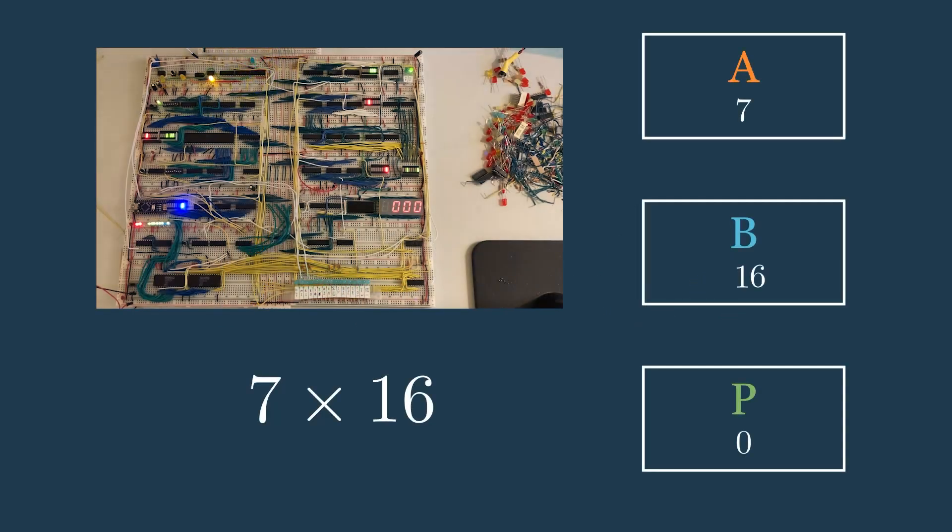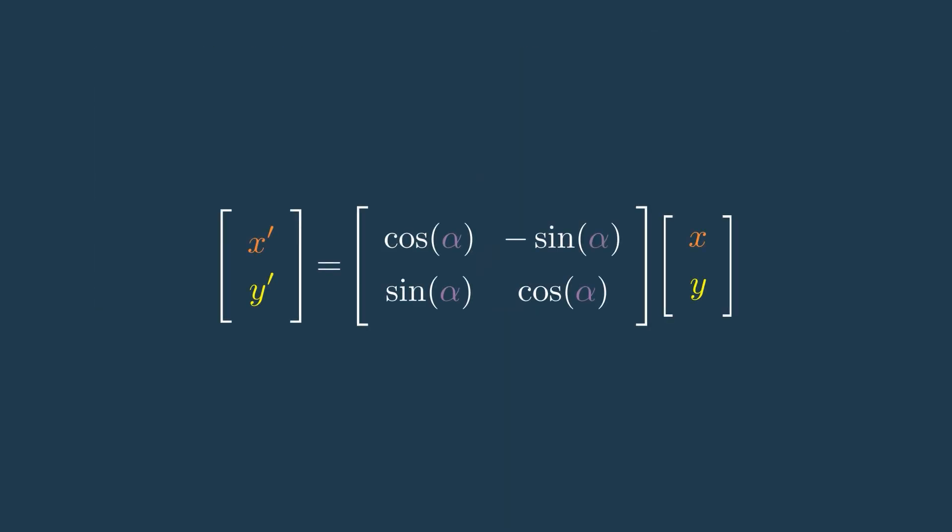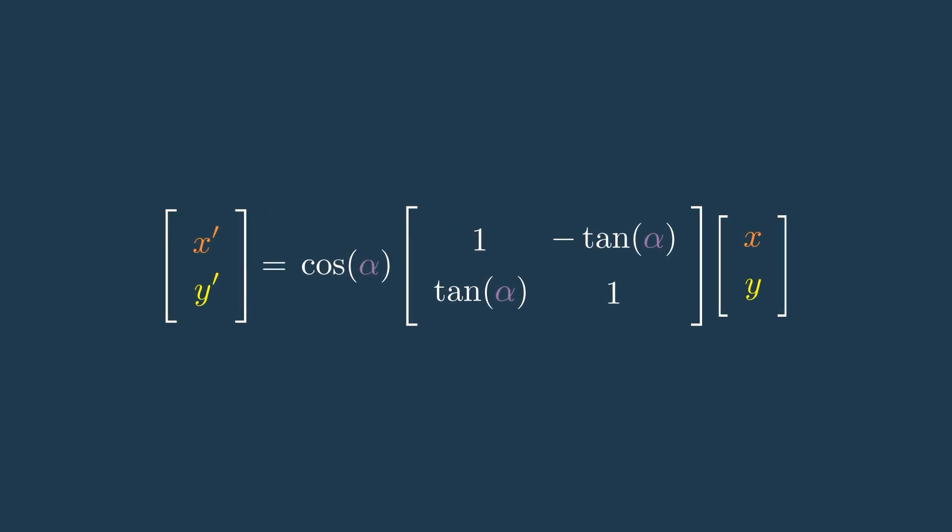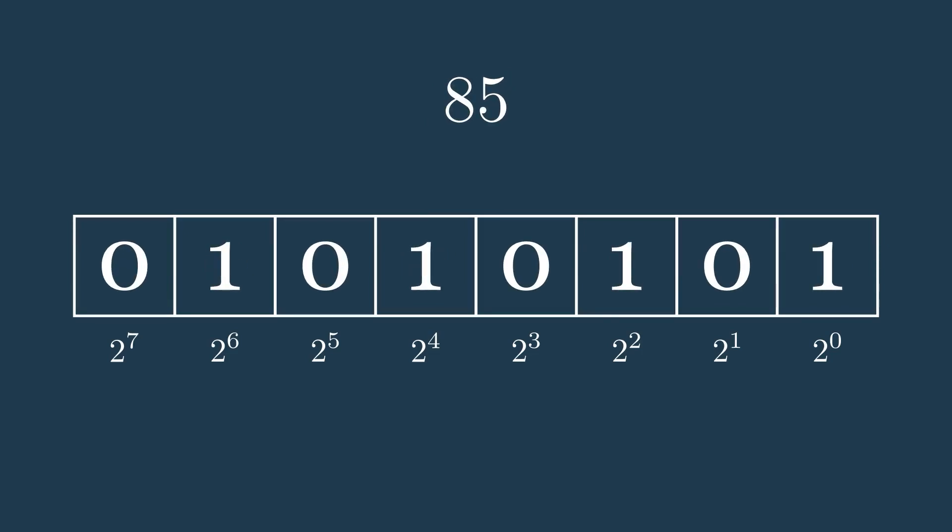After that, we saw that multiplying on computers is actually pretty slow, and we figured out that if we factor out a cosine from our matrix, so our matrix has just the tangent of alpha, and then choose angles whose tangents are powers of 2, then all we'd have to do to find the new x and y coordinates of a rotated vector is shift the digits and add. Finally, we checked that this new series of angles would still work with our algorithm, by making sure that we could still cover the full unit circle, and that the series converged.